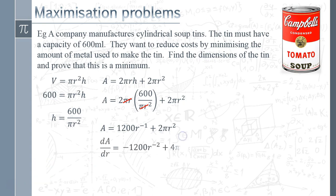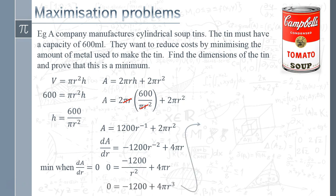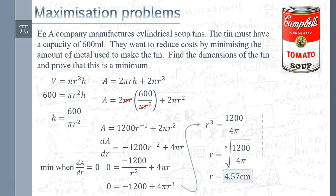Differentiating gives dA/dr = −1200/r² + 4πr. We know the minimum occurs when dA/dr = 0, so we set that equal to zero. Rearranging — multiplying through by r², moving 1200 over, dividing by 4π, and cube-rooting — gives us our value of r.